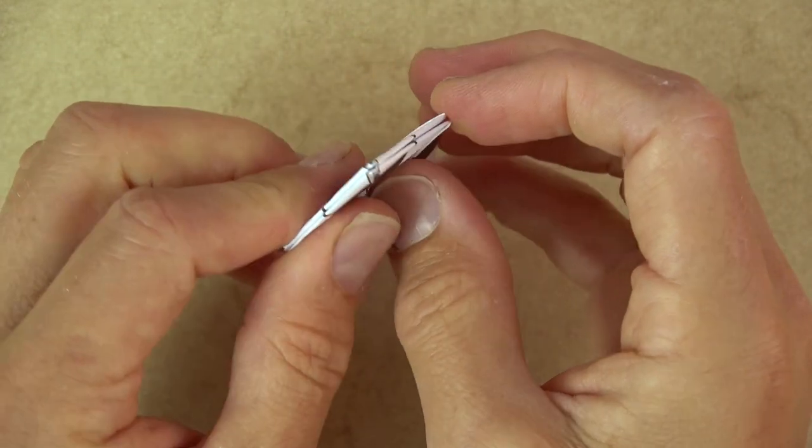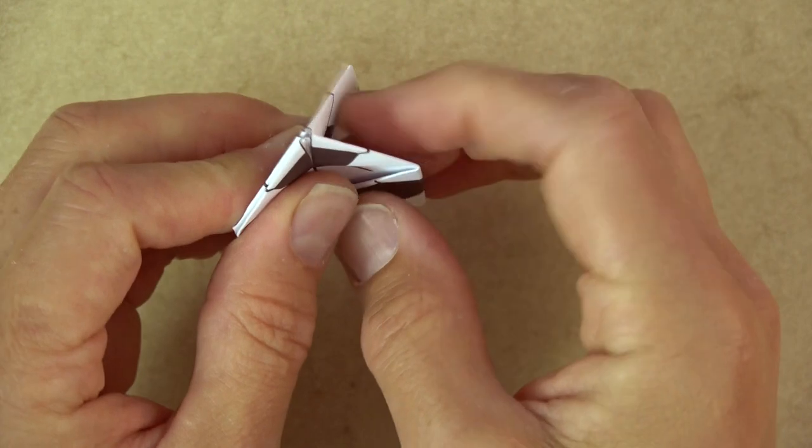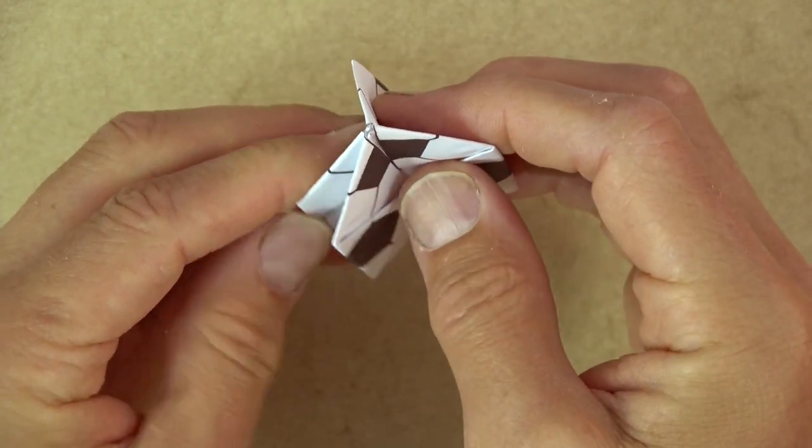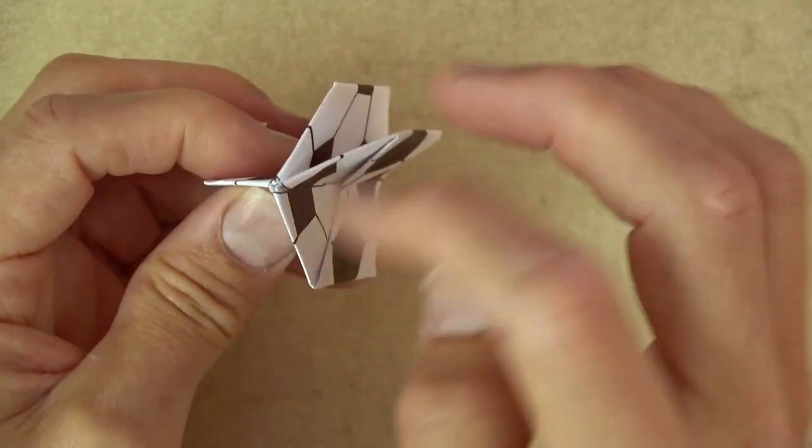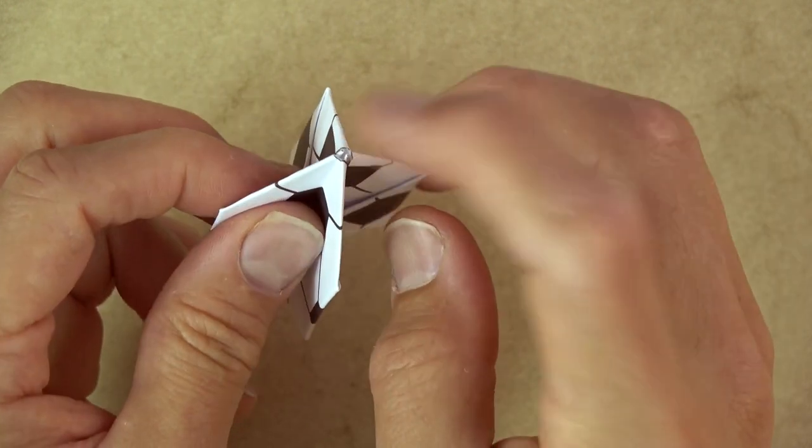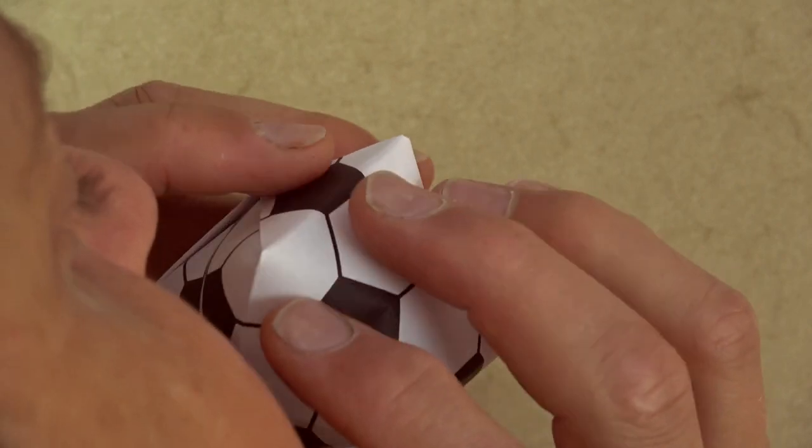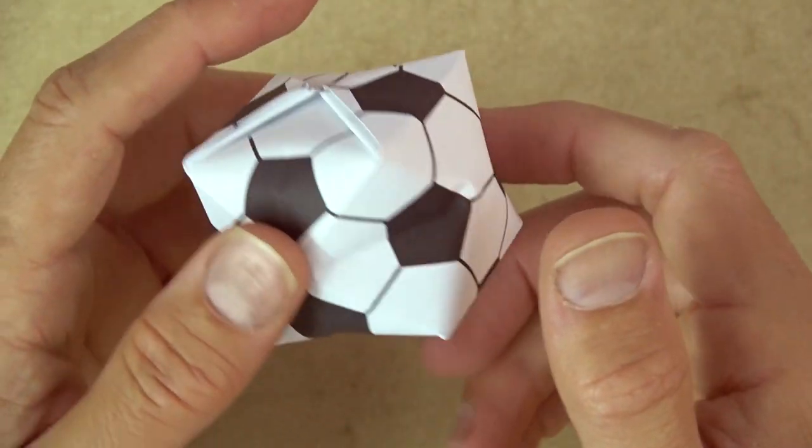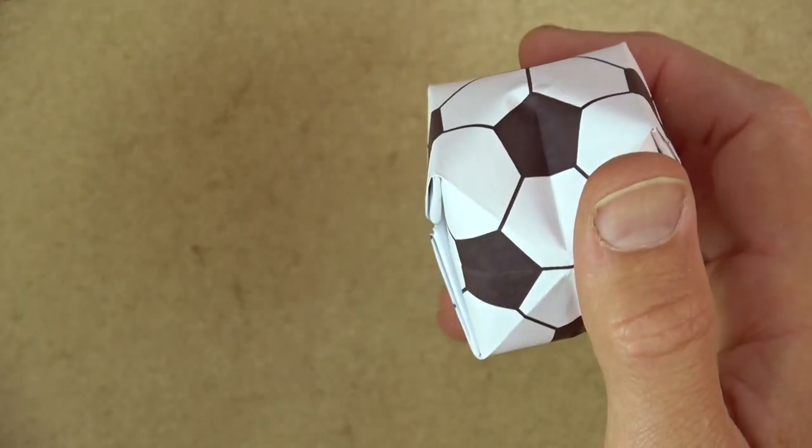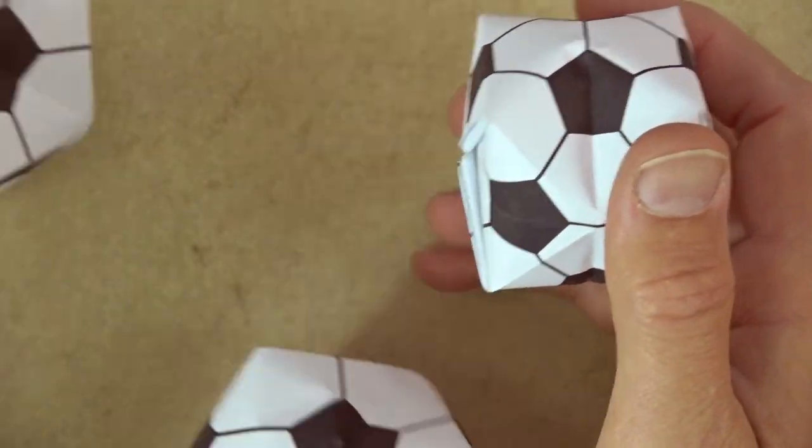And the last step is to blow it up. So bring this flap up and this flap down so we have a flap going in all of the four directions and blow into the little hole there. And voila, the soccer ball. And now you can make different sizes.